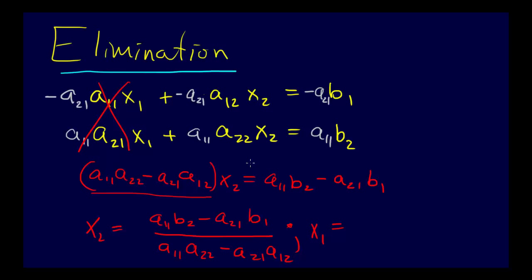Let's start doing that. x1 equals, we'll have to divide everything by a11. If we do that, we're going to come out with b1 a22 minus a12 b2, all over a11 a22 minus a21 a12.